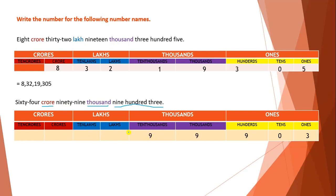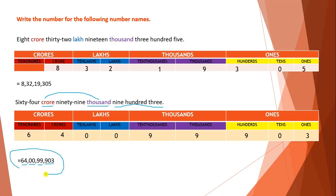They are given 99 in the Thousands period, so I will write 99 in the Thousands period. They have not given the Lakhs period — after Thousands they go directly to Crore. When a period is not given, we need to write zeros in those non-given periods, so I wrote 0 and 0 in the Lakhs period. In the Crore period they are given 64, so I wrote 64 there. The final number is: 903 in the Ones period, 99 in the Thousands period, 00 in the Lakhs period, and 64 in the Crore period.